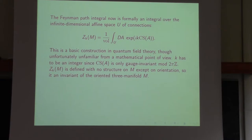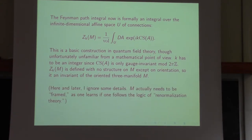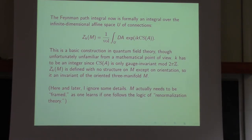Formally, Z_k of M is defined with no structure on M except orientation, so it's an invariant of the oriented three-manifold M. I'm going to ignore various details — a typical example is that M actually needs to be framed, which is something we learn if we follow the logic of renormalization theory. But I'll skip this for now.